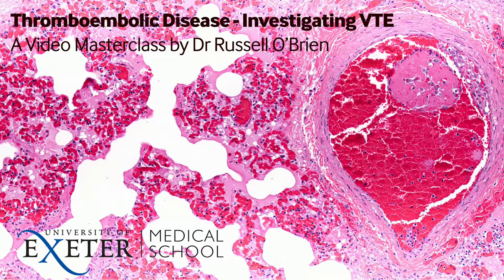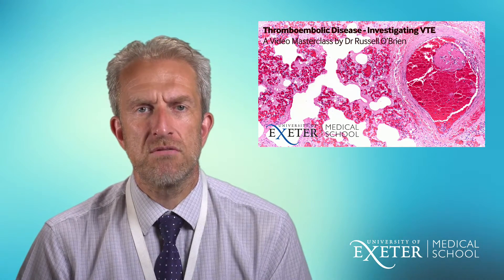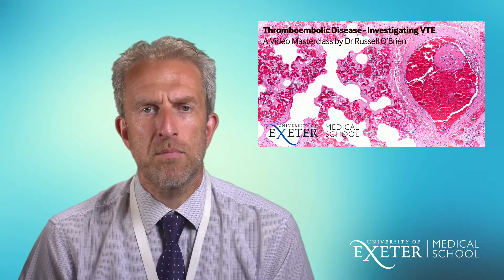This introductory slide shows a histological specimen looking at a branch of the pulmonary artery with a huge clot in it on the right, and lung tissue and alveoli on the left. This is a pulmonary embolism, and working in acute medicine we see people with confirmed or presumed pulmonary embolism most days. This is a big part of any general medical workload, and as a future GP you'll certainly be referring patients to hospital for further tests.